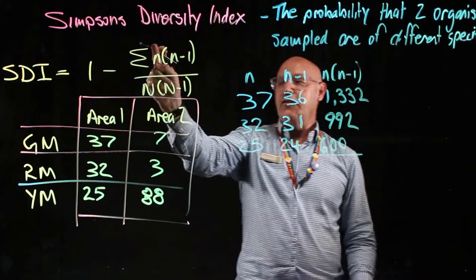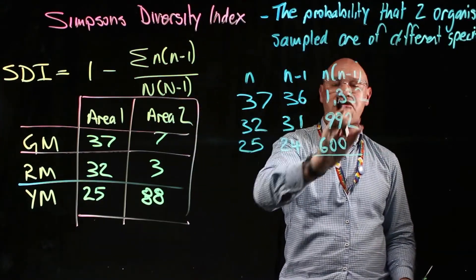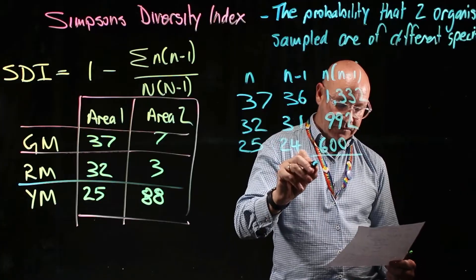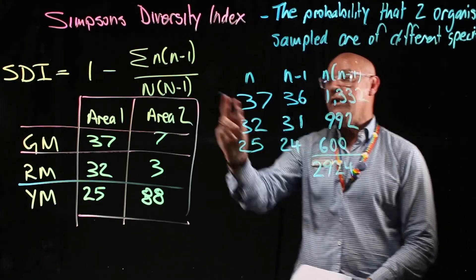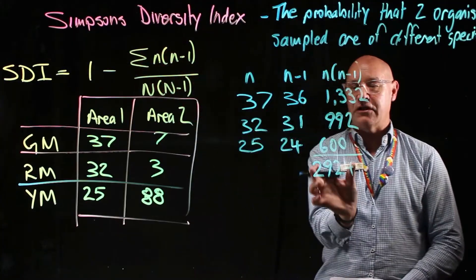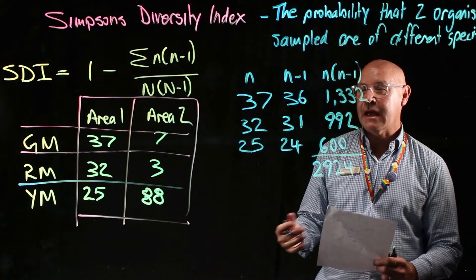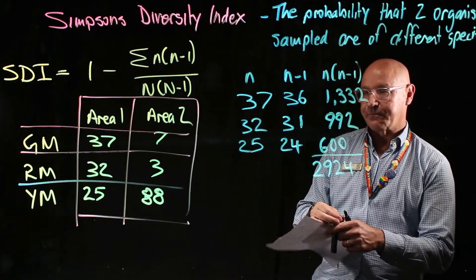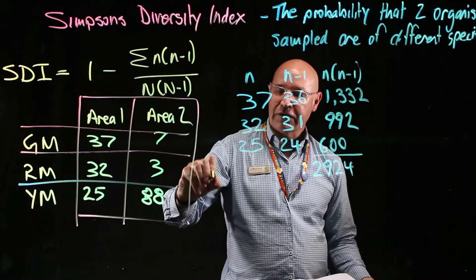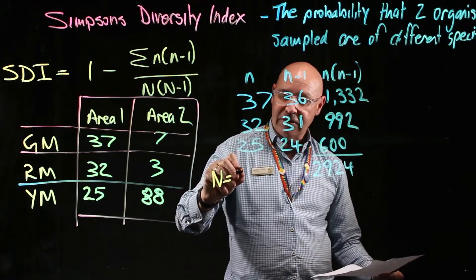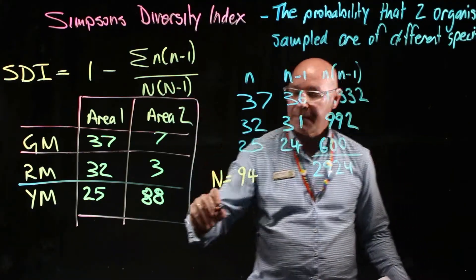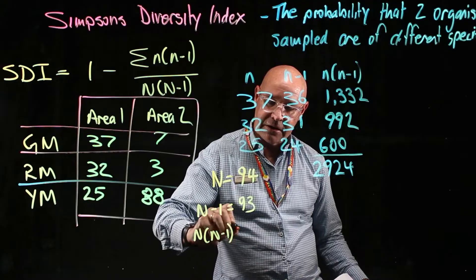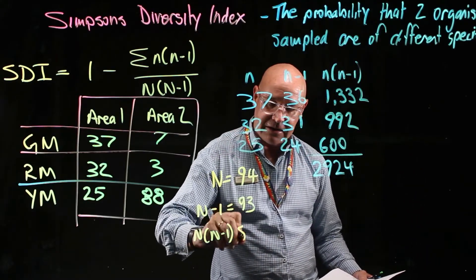The sigma symbol means sum, so we need to add up all of those products: 1332 plus 992 plus 600, which gives us 2924. Now we need capital N, which is the total number of organisms in the whole community: 37 plus 32 plus 25, so capital N equals 94. Capital N minus one is 93, and N times (N minus one) is 93 times 94, which equals 8742.